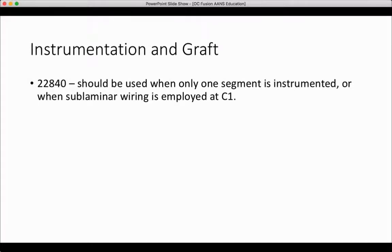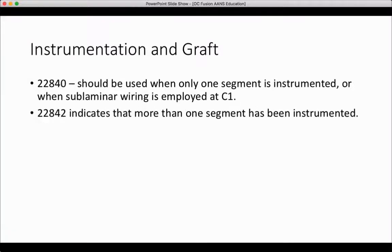22840 is the instrumentation code that should be used when only one segment is instrumented, or when sublaminar wiring is employed at C1. 22842 indicates more than one segment has been instrumented. Of note, this includes occipital instrumentation.